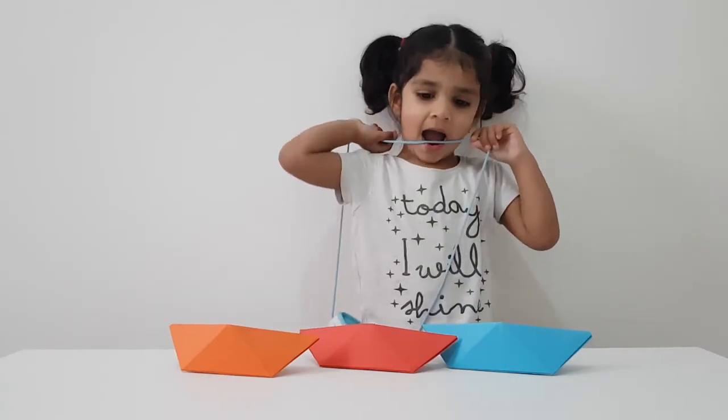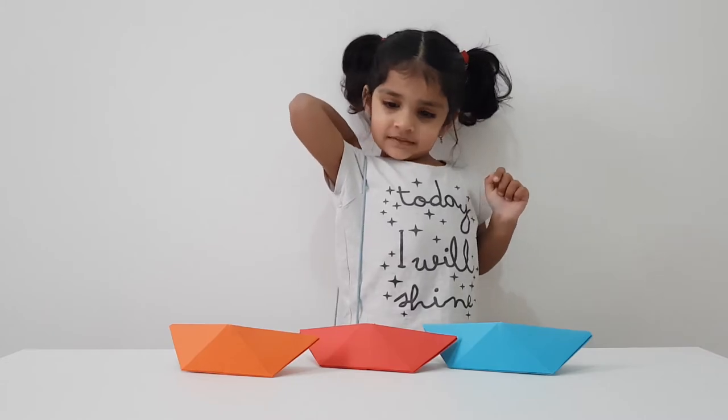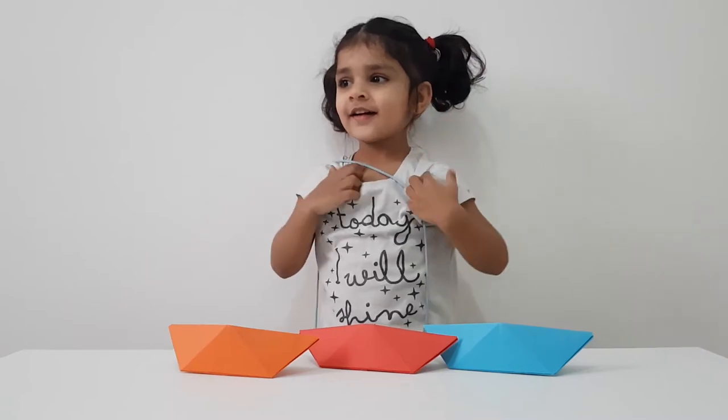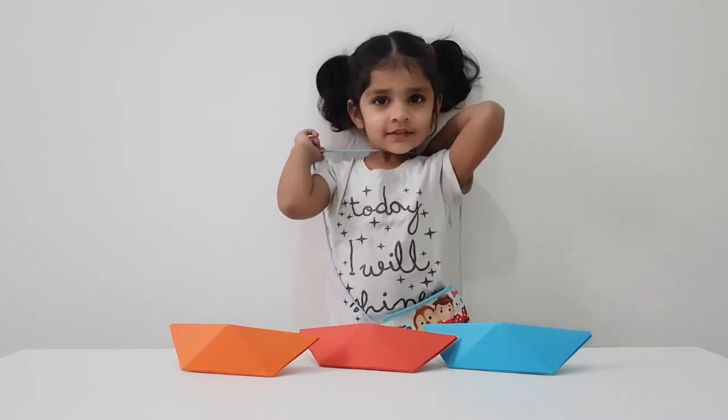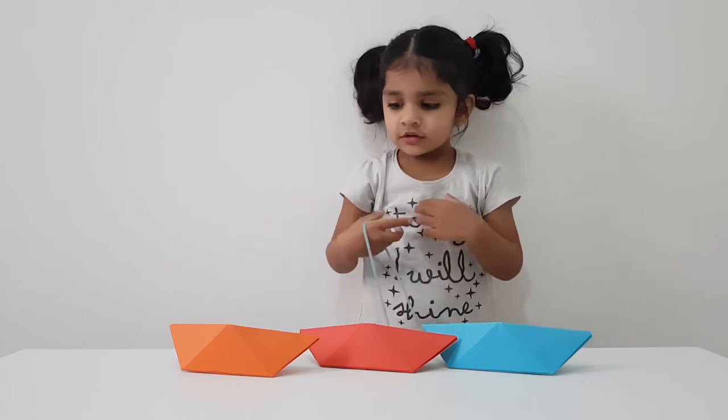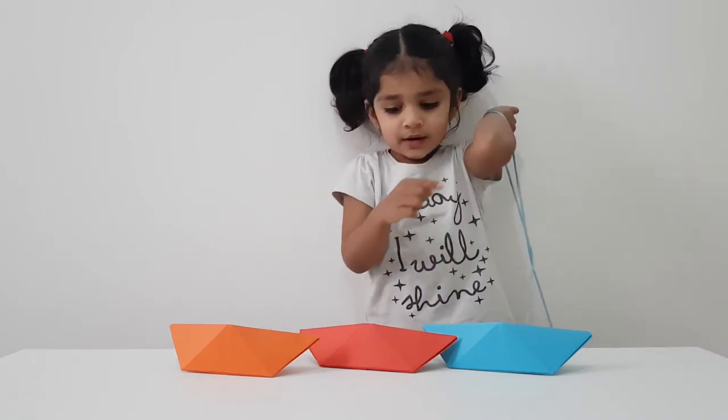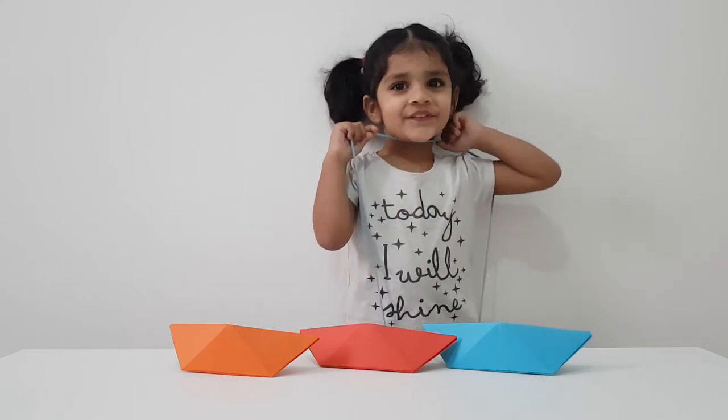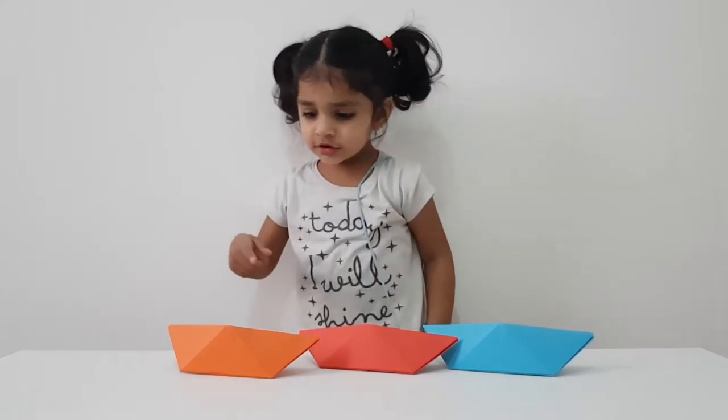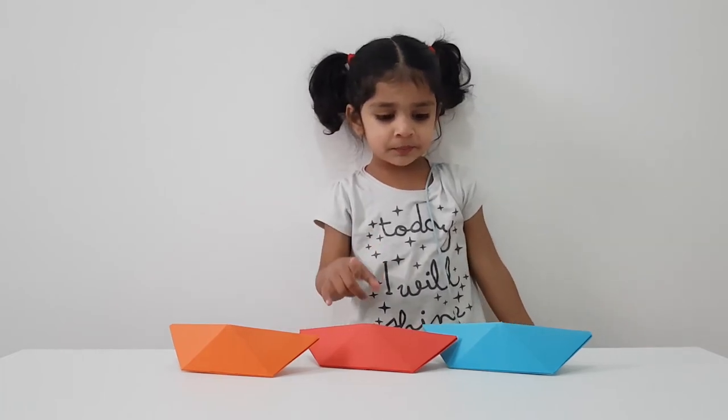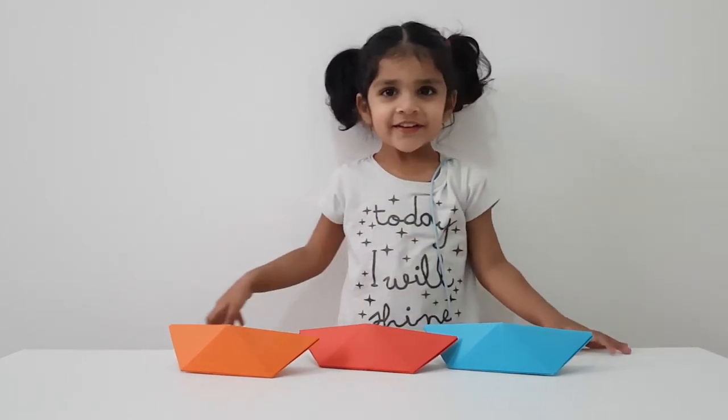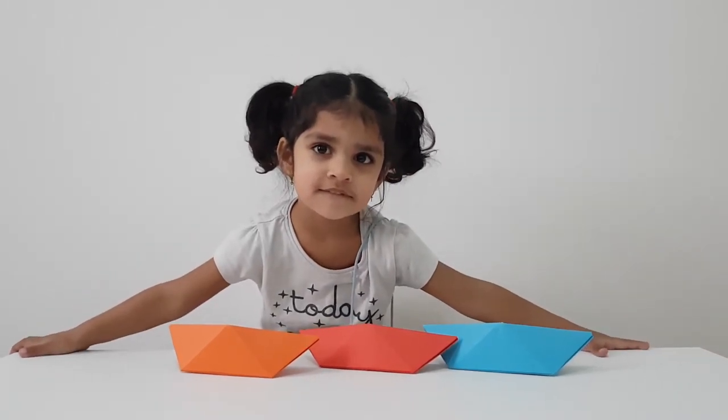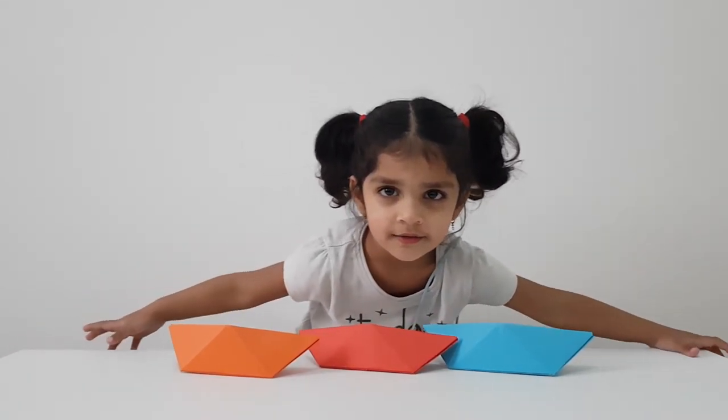So what do you have on the table? These are colorful boats for Mira. We are taking it to the water now. Can you please tell me those colors Mira? This is orange, red, blue. So which is Mira's boat then? This is Mira's boat. Orange one is Mira's boat. Red one is Momma's boat and blue one is Daddy's boat.